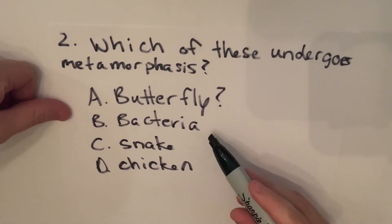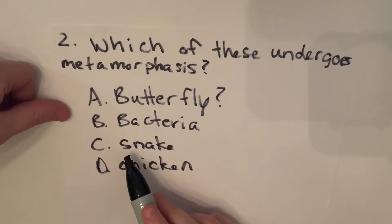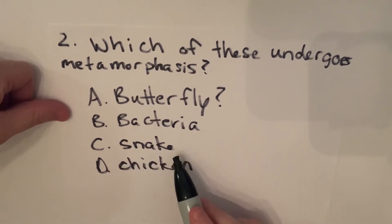coli. E. coli will never change into, say, strep throat. It will stay E. coli and just become bigger. A snake will never become a snake with wings; it will just shed its skin